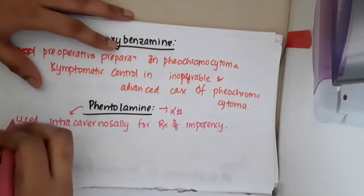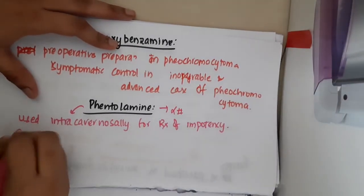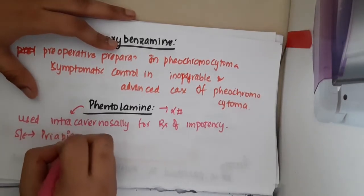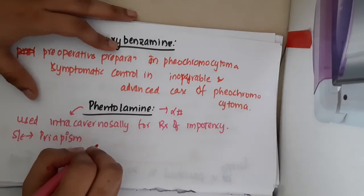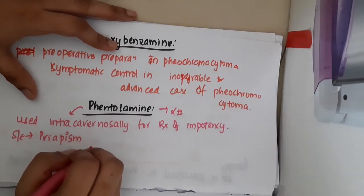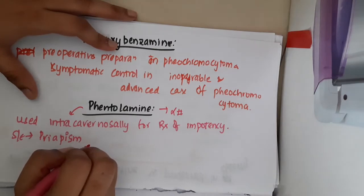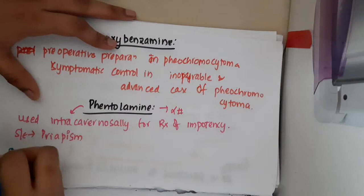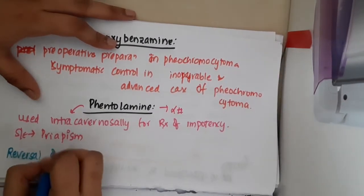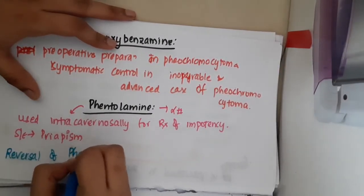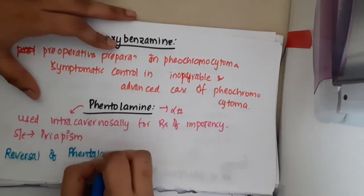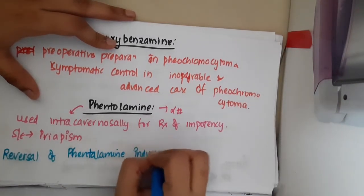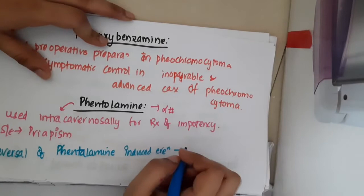The side effect of Phentolamine is Priapism — that is the severe side effect of Phentolamine. Now, if there is Phentolamine-induced erection, it obviously causes Priapism. So for reversal of Phentolamine-induced erection, which drug is used?